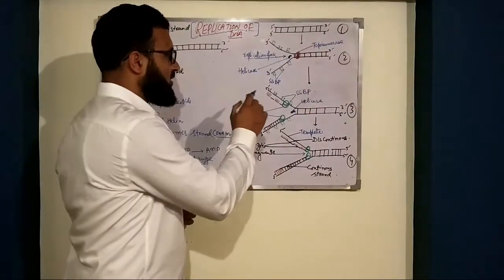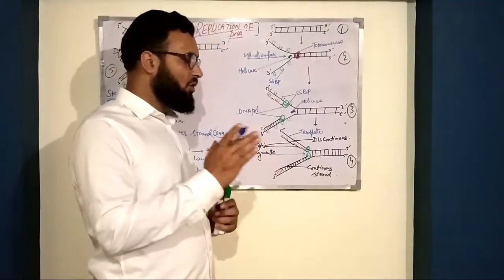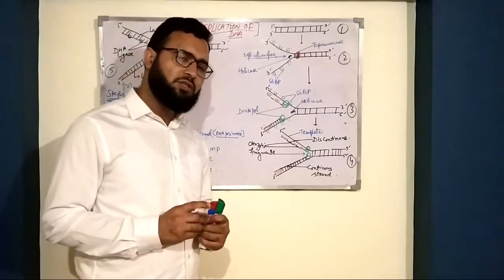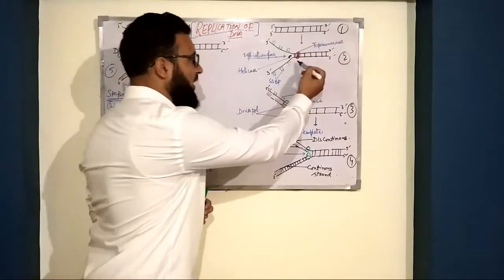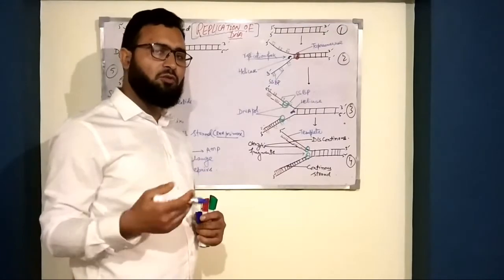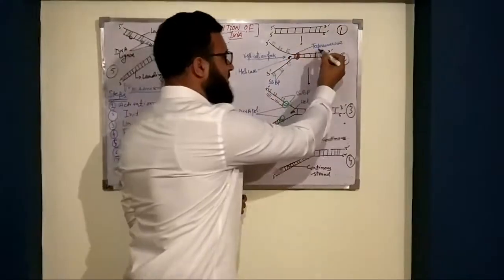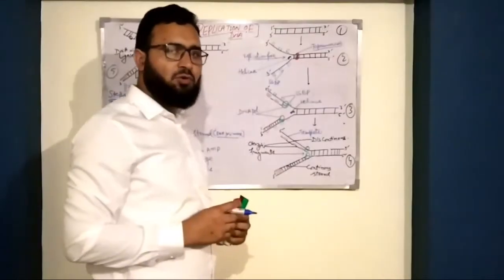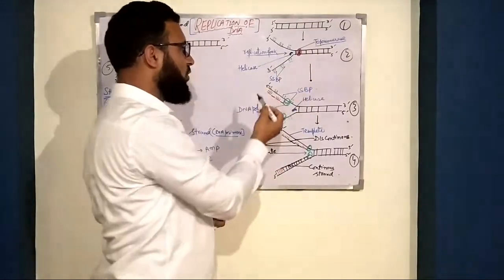When the DNA strands are opened, supercoiling occurs in the DNA. This supercoiling is removed by another enzyme called topoisomerase, also known as DNA gyrase.